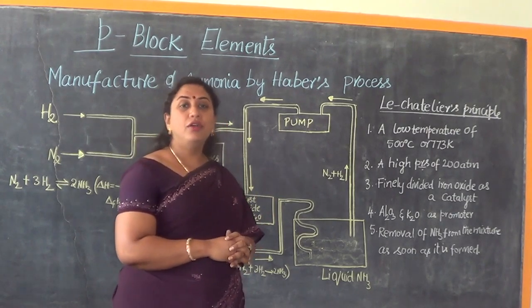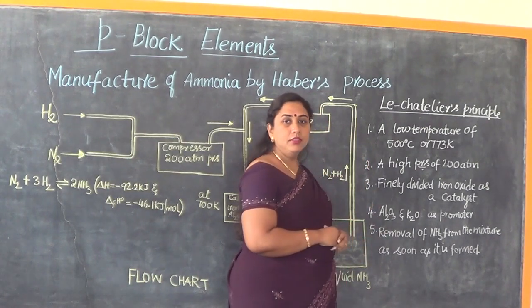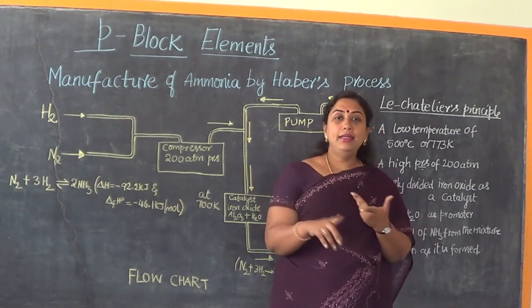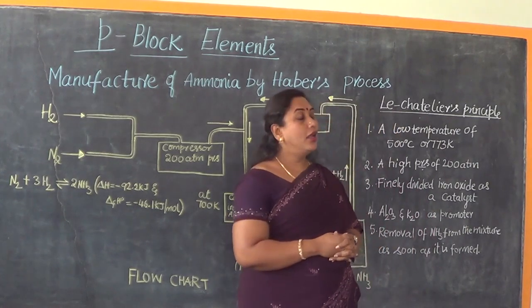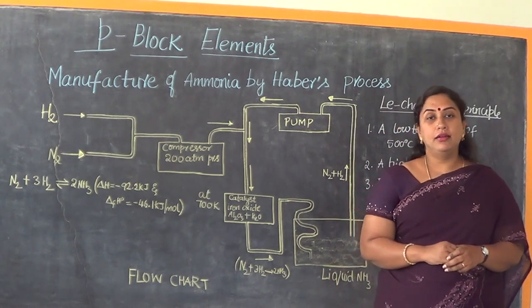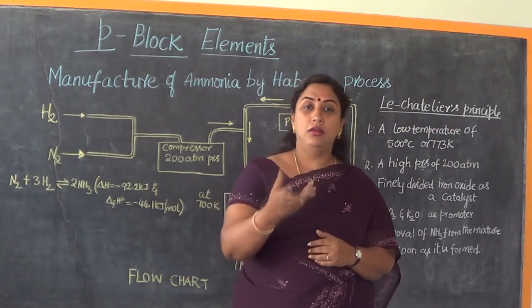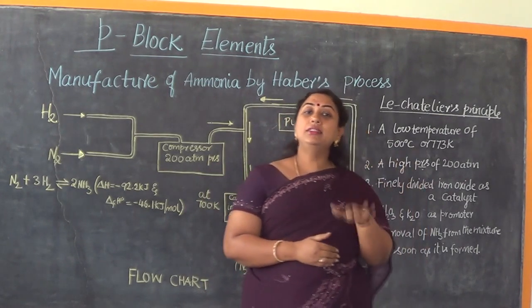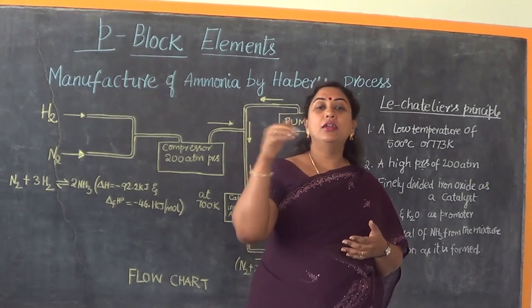To understand the manufacturing of ammonia by Haber's process, let us look at Le Chatelier's principle. There are certain conditions we follow to get good quality and good quantity of ammonia. Scientist Le Chatelier worked out the concept of chemical equilibrium and gave a principle stating that if a constraint is added to a system in equilibrium, the equilibrium shifts so as to nullify the effect of that constraint.